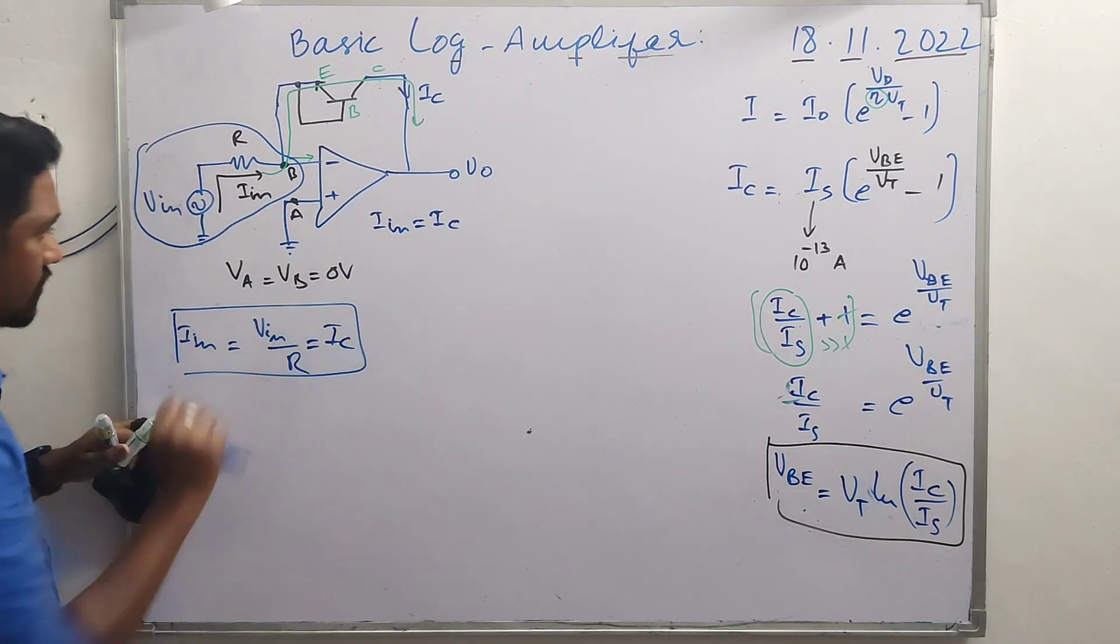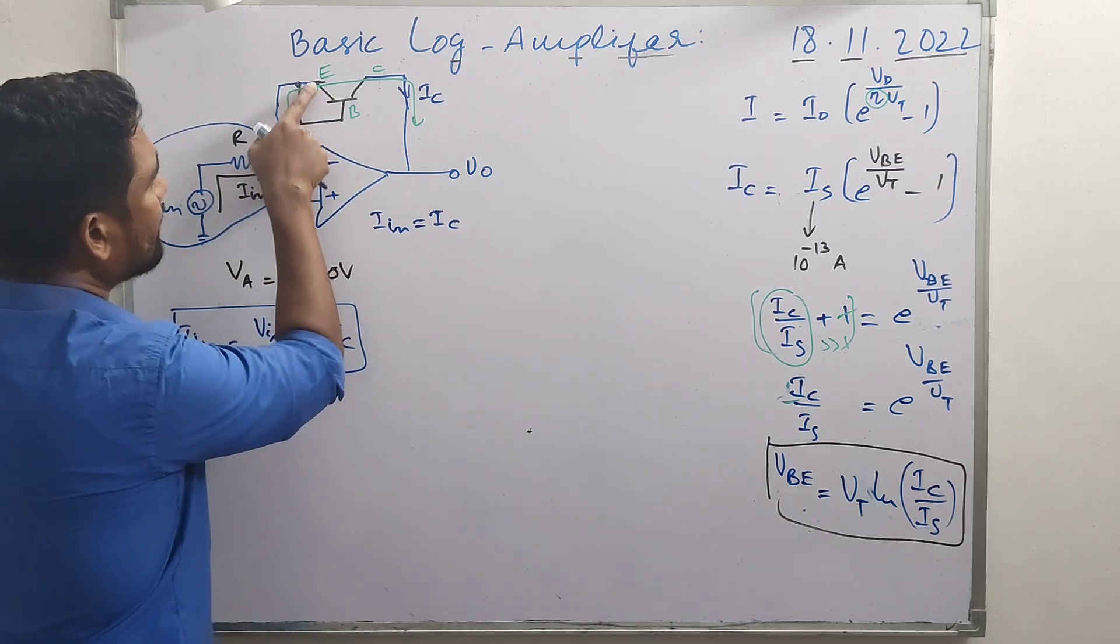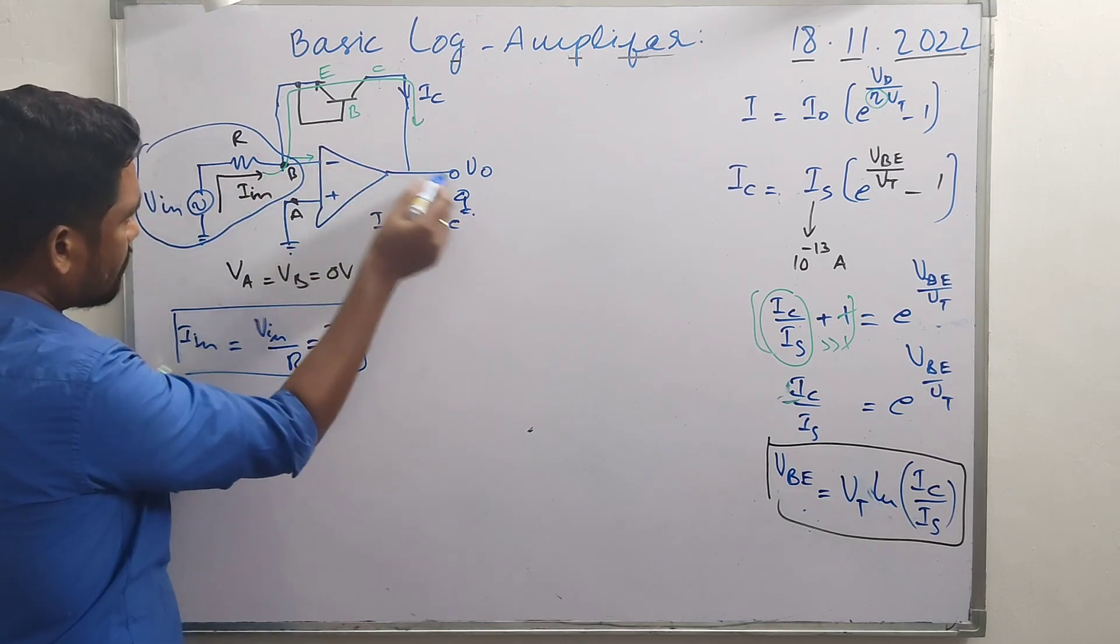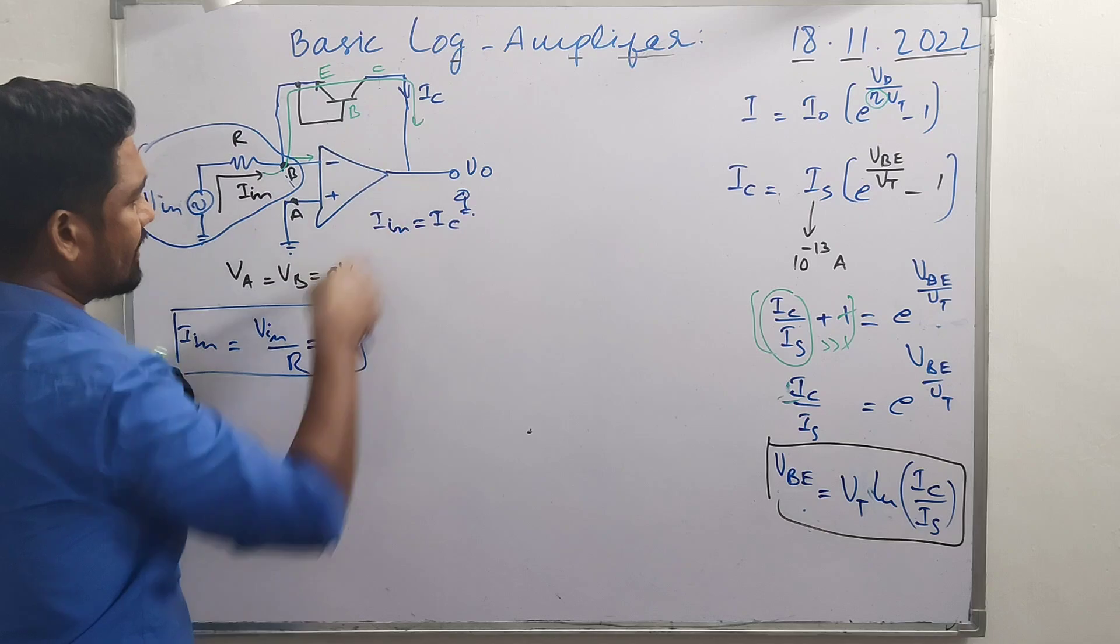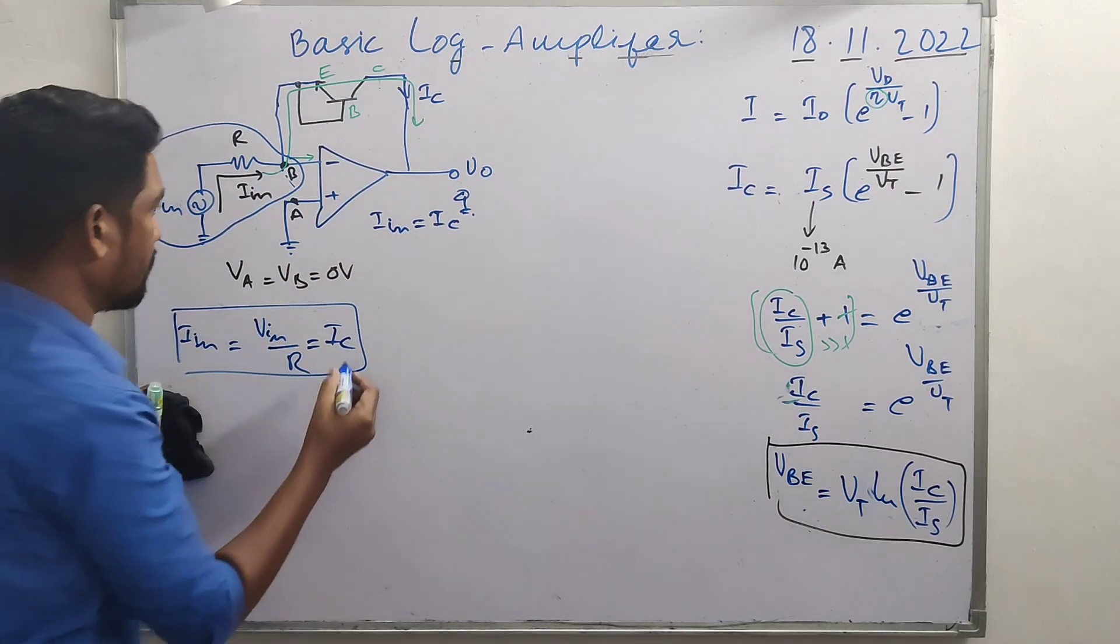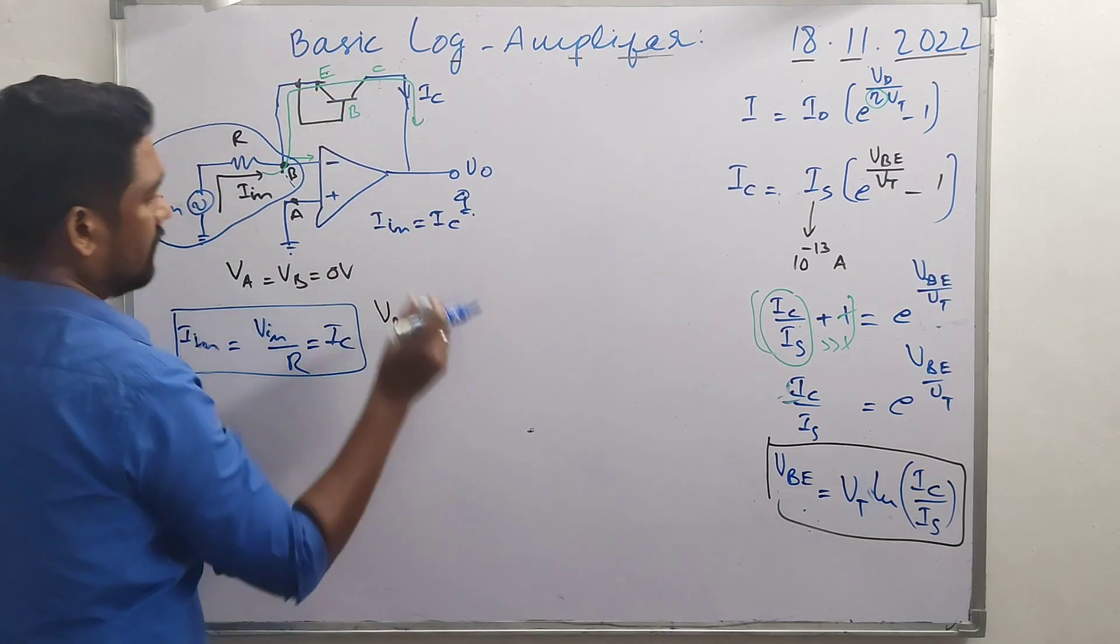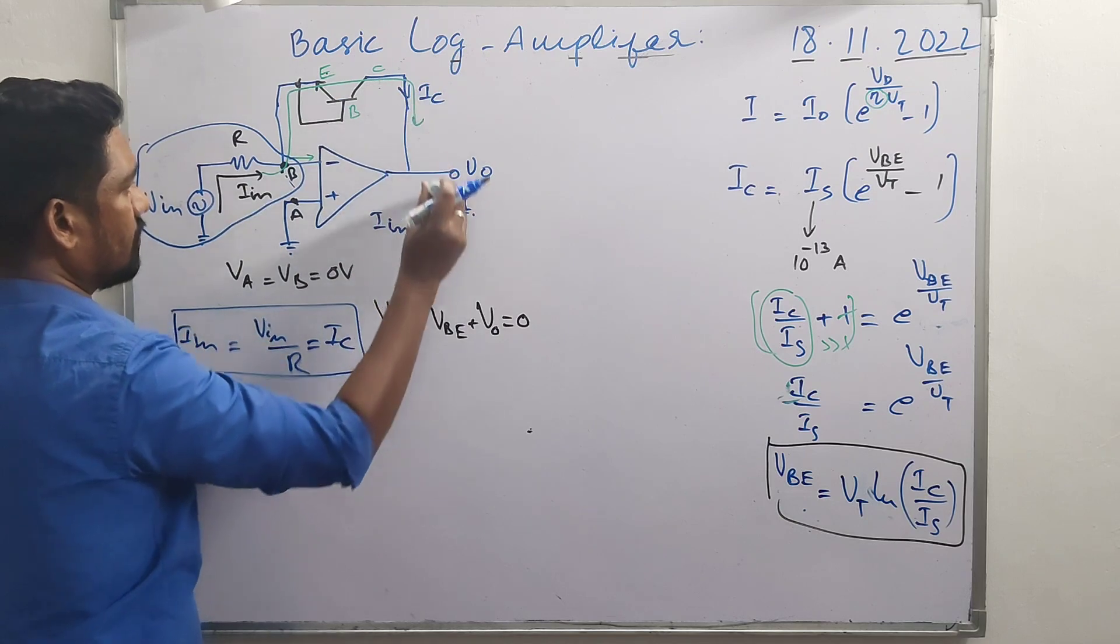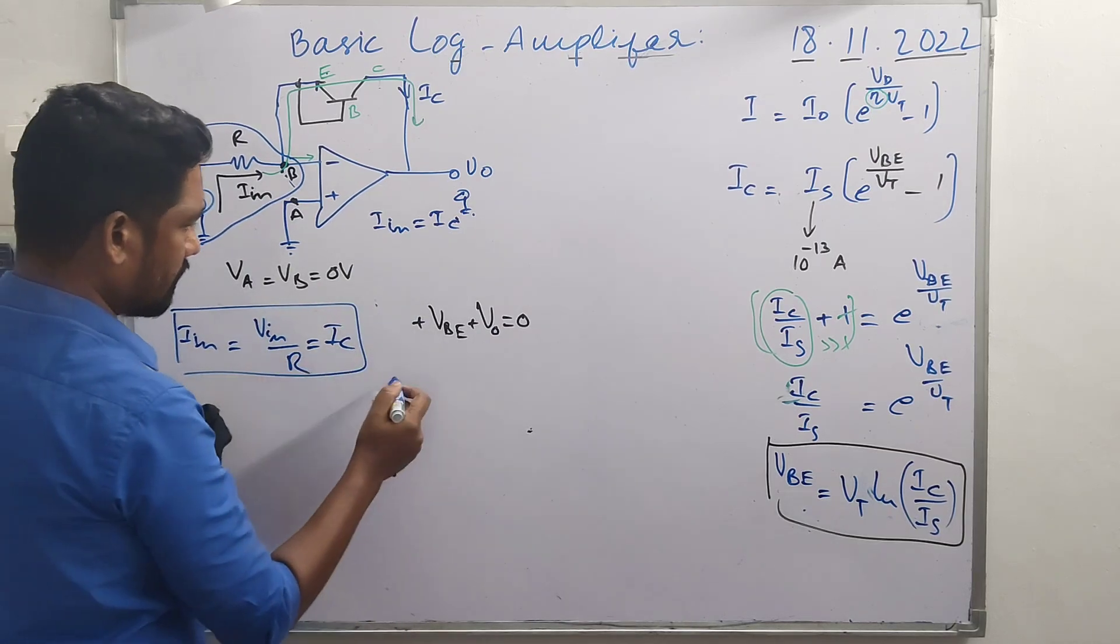V_B and V_BE (base-emitter voltage) and V_out are in series. Ground is here and here is virtual ground. According to Kirchhoff's voltage law, in a series closed loop, the sum of all voltage drops equals zero. We can write: V_B + V_BE + V_out = 0. V_B is zero according to virtual ground concept. From that, V_BE = -V_out.